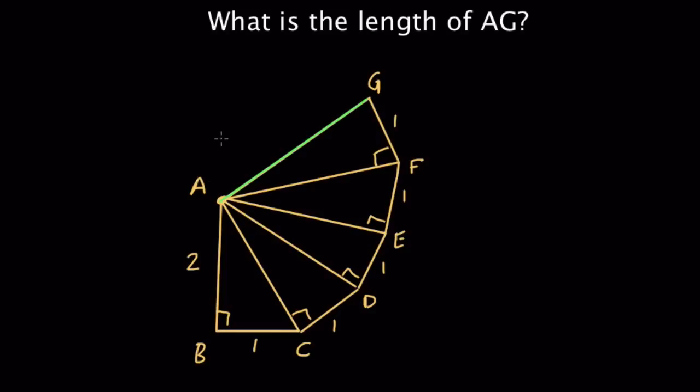This is a classic problem, the wheel of Theodorus, right? Where it's one right triangle built on another. And what you might notice is that they all have something in common. What I notice is the shorter leg is always the same, right? In each of these triangles, what is the shorter leg always equal to? Well, I see that they're all equal to one, and that's the common thread here.